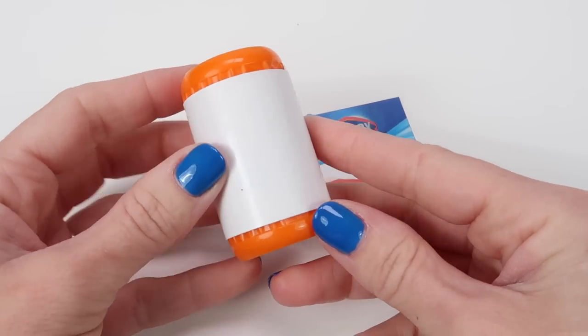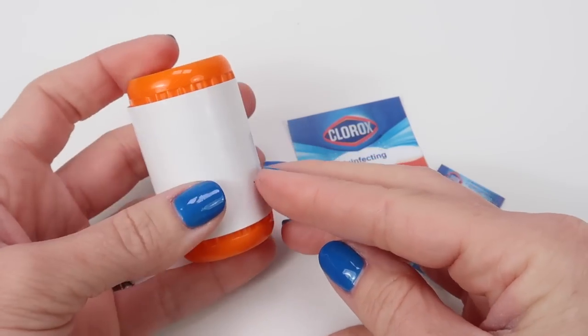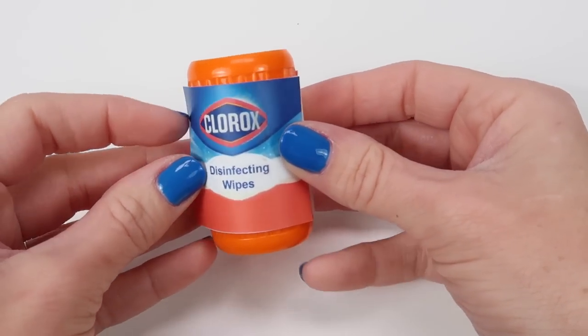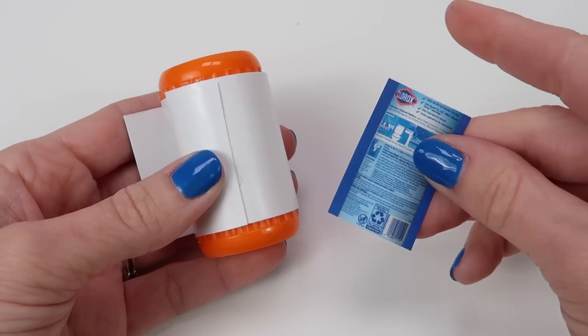I have these lids that are from baby food pouches. I just stacked them together, glued them together, and now it looks like a jumbo container of Clorox wipes.